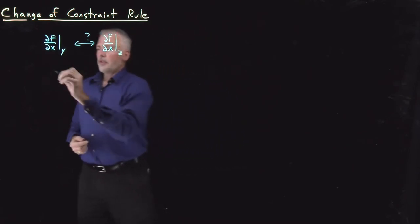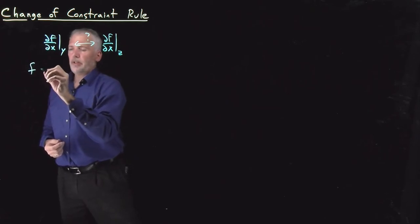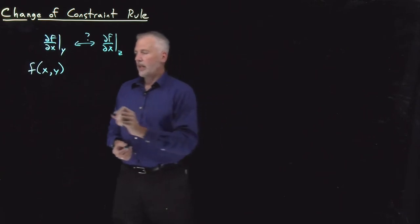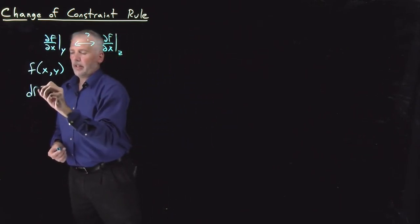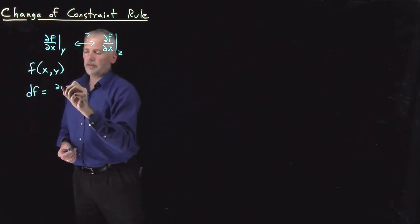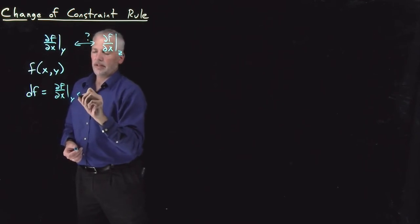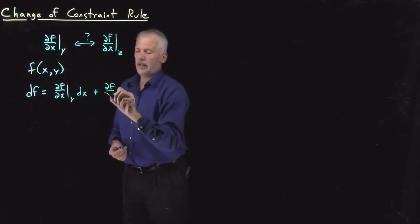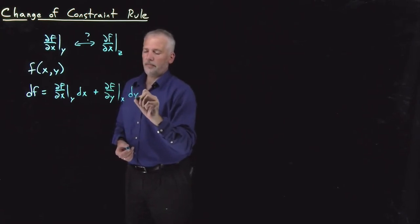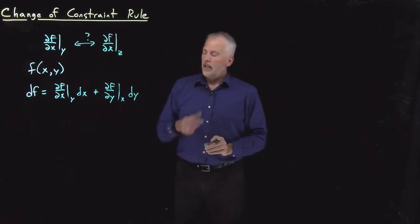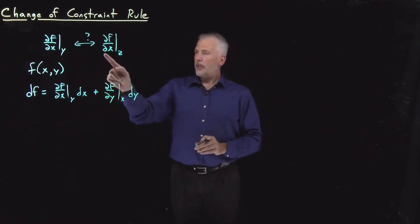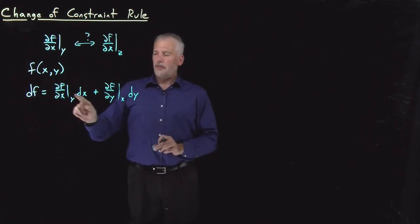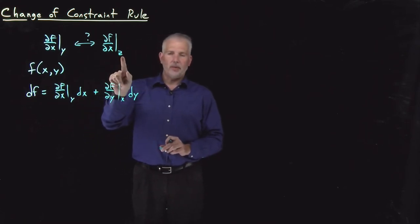So to understand how we can do that, let's start with thinking of f as a function of x and y. If I write the differential of that function, it's going to be ∂f/∂x times dx and ∂f/∂y times dy. Now what I'll do to make some progress toward making it look like this is I'll take both sides of this equation and I'll take the differentials divided by dx while doing that at constant z.